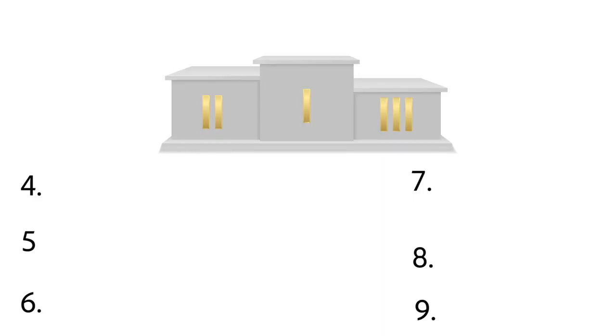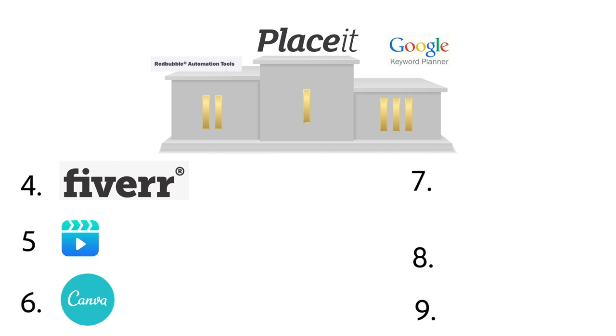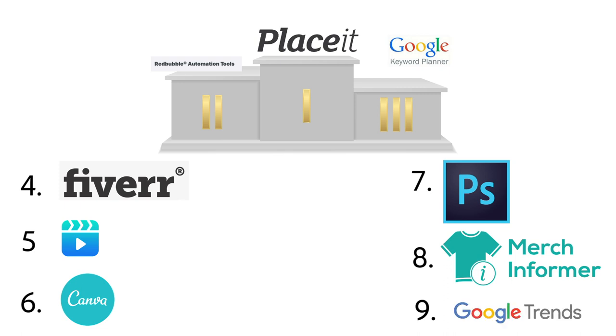Now I want to rank all these tools for what I feel is most important for a general print-on-demand seller. Number one is Placeit. Number two is the Redbubble Tags tool. Number three is the Google Keyword Planner. Number four is Fiverr. Number five is Creator Studio. Number six is Canva. Number seven is Photoshop. Number eight is Merch Informer. Number nine is Google Trends. This is my personal opinion of an accurate rank for the general print-on-demand public. If it were me personally, Photoshop would be near the top — maybe number two after Placeit or even number one — because I use it every single day. But not everyone can use Photoshop, so I didn't want to place it so high.